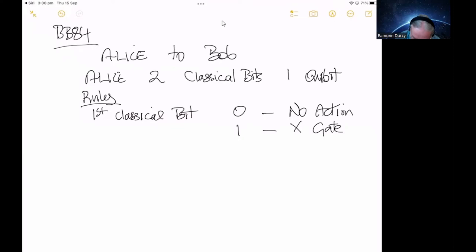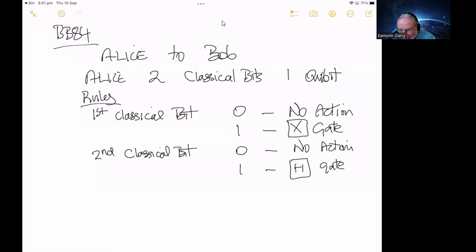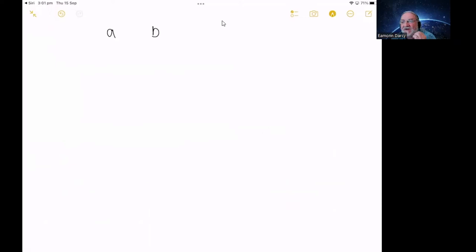And then when she throws the second or flips the second classical bit. If she gets a zero again, she takes no action. And if she gets a one, she applies a Hadamard gate. So an X gate on the first coin if it's a one, coin bit. And a Hadamard gate on the second bit if it's a one. Now you might remember the Hadamard gate from when we are lesson on, I think it was lesson seven on quantum gates. The Hadamard gate puts the qubit into superposition. And that's interesting. The combinations we have.